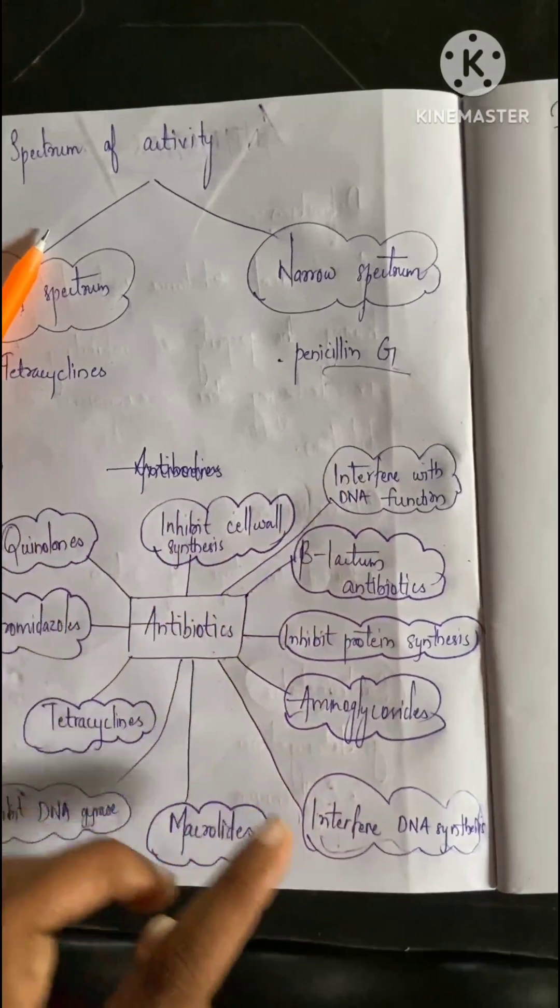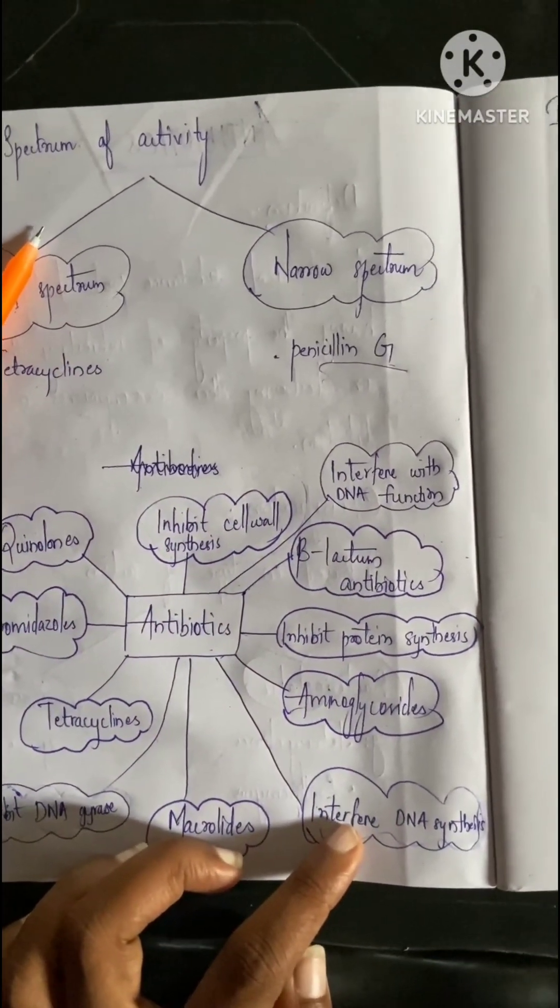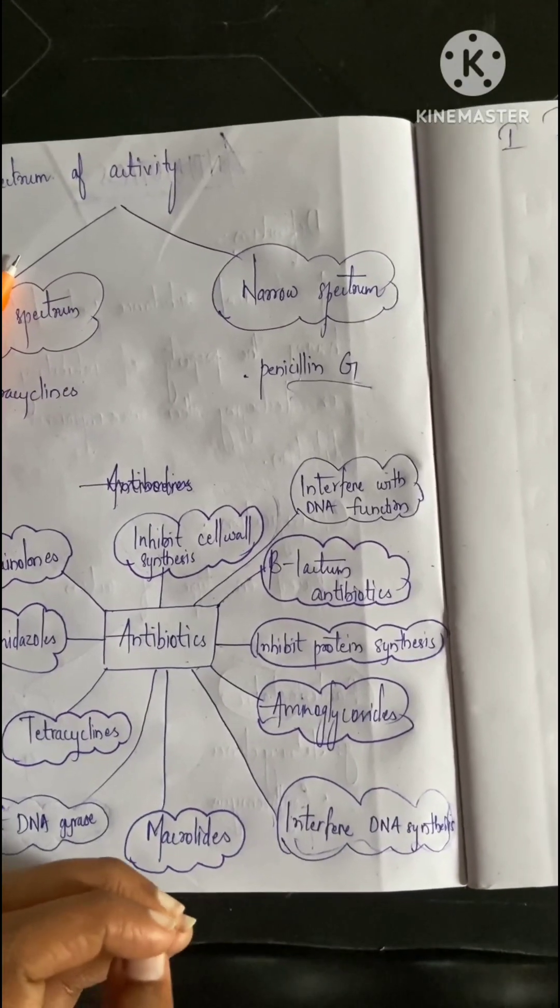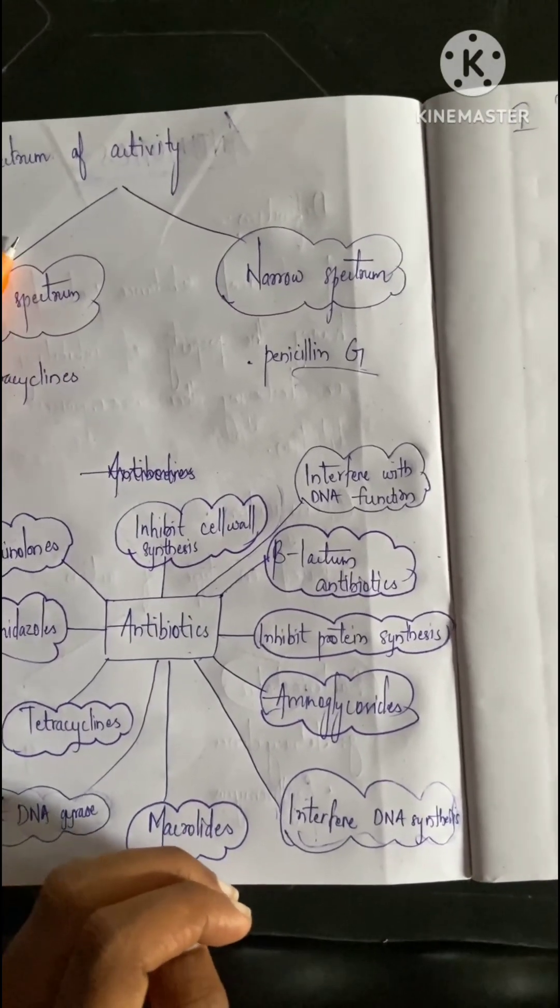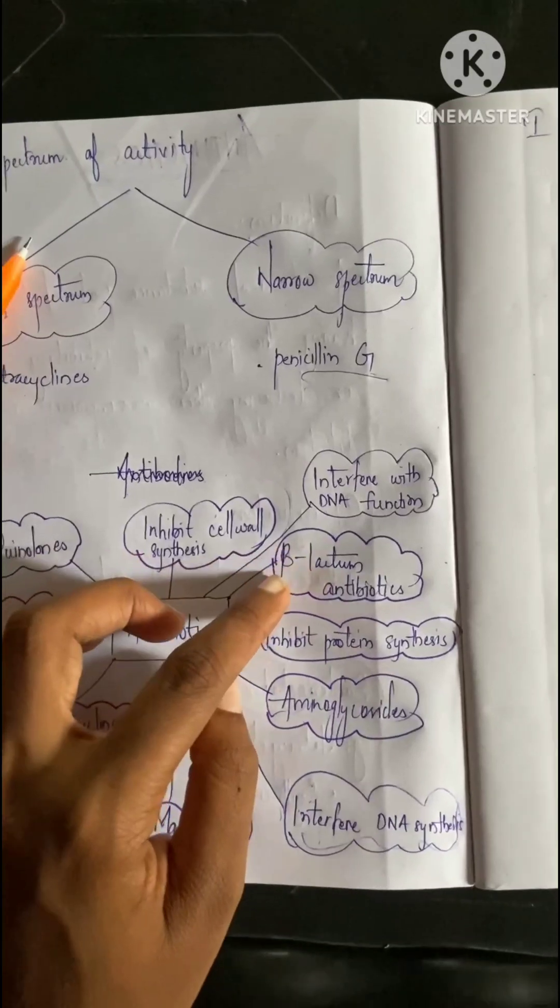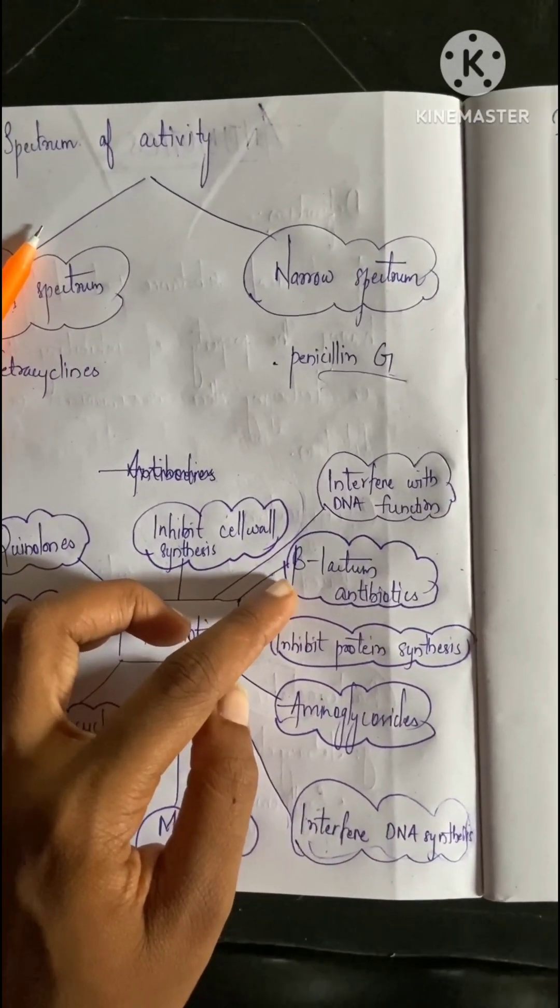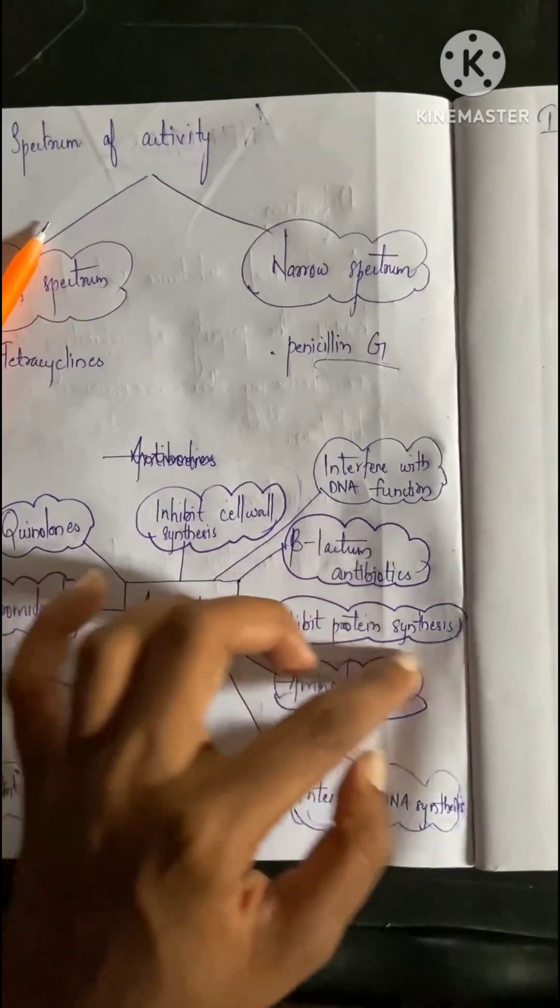Next is interfere with DNA synthesis - preventing the DNA synthesis of the microbe. An example is idoxuridine. Next is beta-lactam antibiotics - that includes penicillin and cephalosporins.